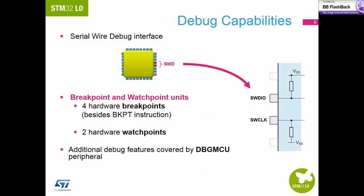On the STM32L0, debug is done via the serial wire interface. This provides up to six breakpoints with the loss of only two GPIO pins on the device.